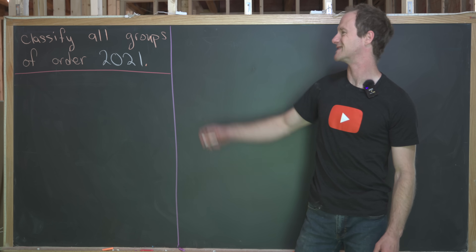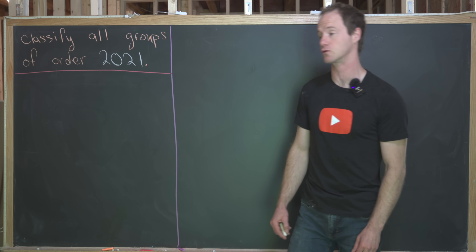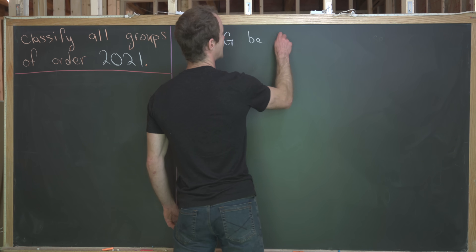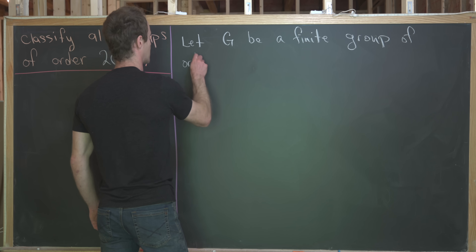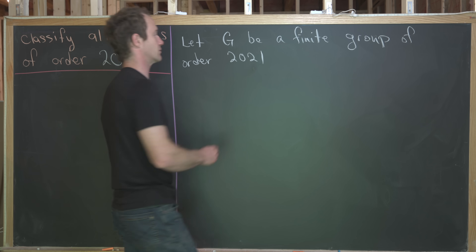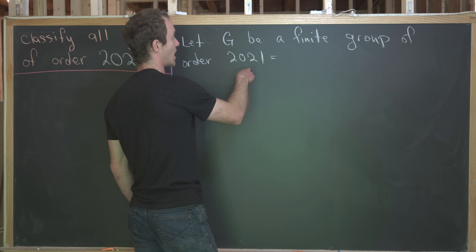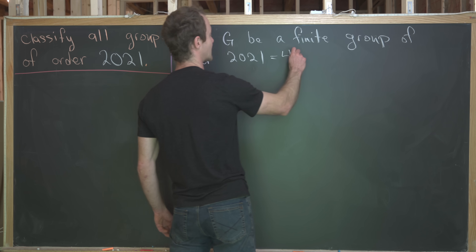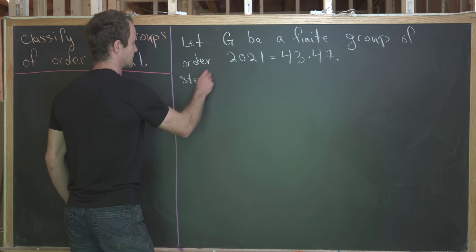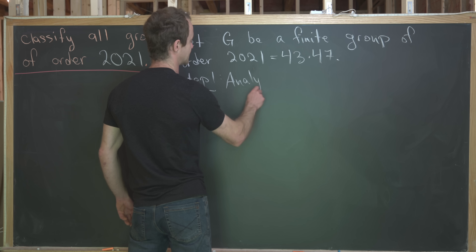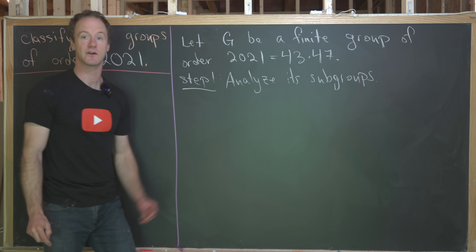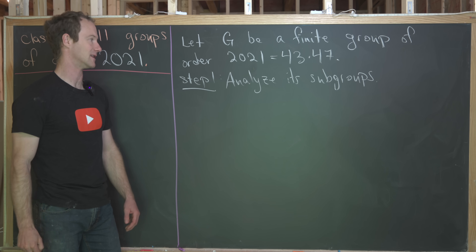The first thing we want to do is understand the subgroups of a group of order 2021. Let G be a finite group of order 2021. We're going to first analyze its subgroups, and I want to notice that 2021 factors as 43 times 47. We're going to use the Sylow theorems to get a start at analyzing these subgroups.